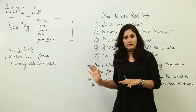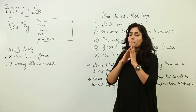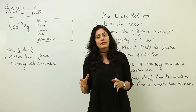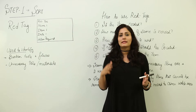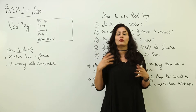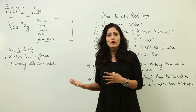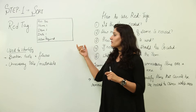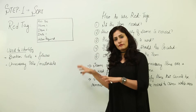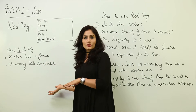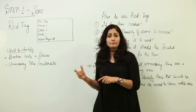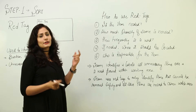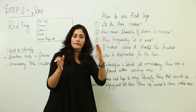The golden rule when red tagging any item is to check the frequency of its use. If it is used very frequently, it should remain in the workspace itself. If it's not used that frequently, it has to be moved out. This is the basic rule to remember while red tagging. Red tags are used to identify broken tools, fixtures, or unnecessary tools and materials.